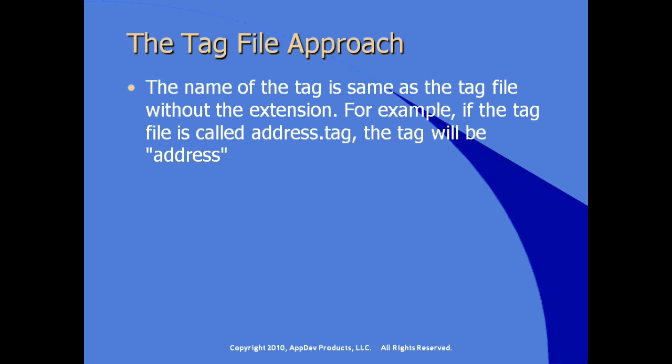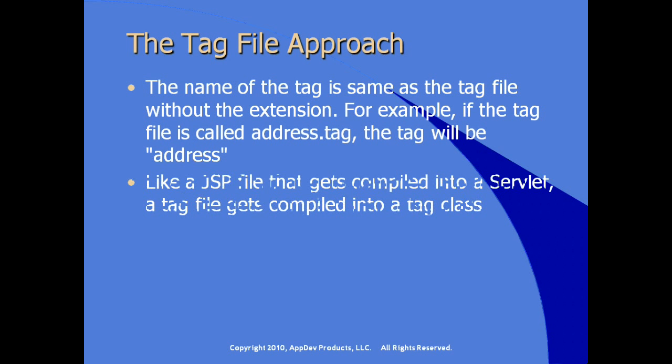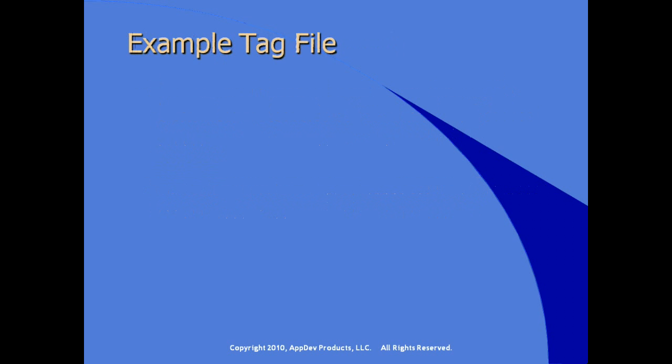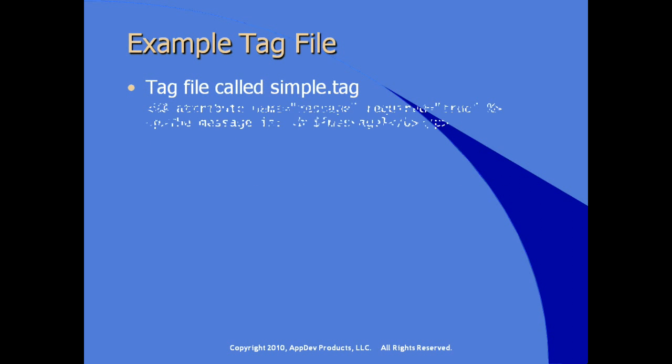For example, if you wanted to create a custom tag called address, the name of the file would be address.tag. Like a JSP file that gets compiled into a servlet, a tag file gets compiled into a tag class at runtime. A very simple example: a tag file called simple.tag would look like this.